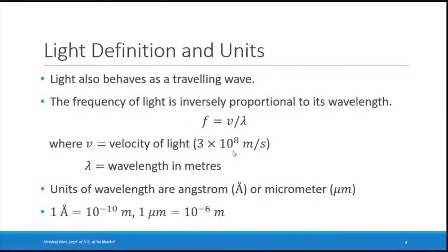Light also behaves as a traveling wave with frequency equal to v divided by lambda, where lambda is the wavelength and v is the velocity of light, 3 × 10⁸ m/s. Wavelength units are meters, but for light we typically use micrometers (10⁻⁶) or angstroms (10⁻¹⁰).